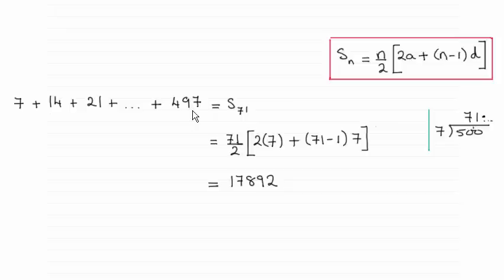So then I picked up on the sum of the first n terms of an arithmetic progression, this formula here. So this was equal to S71. There were 71 terms, so 71 divided by 2, twice the first term 2 times 7, plus n minus 1, number of terms minus 1, times the common difference which was 7. And that comes out at 17,892.